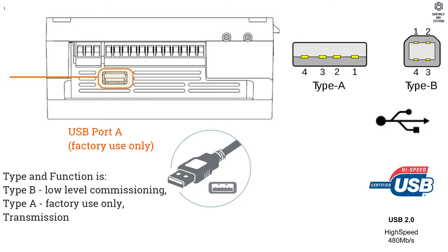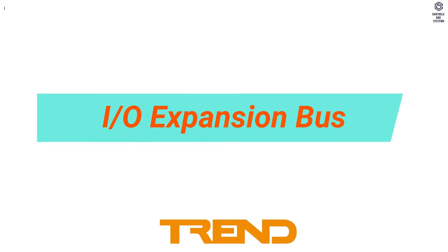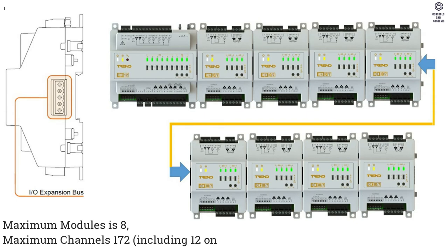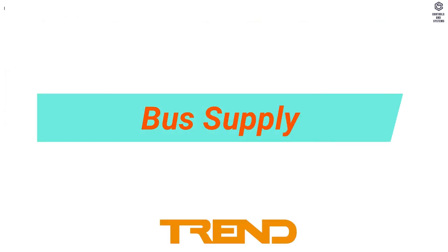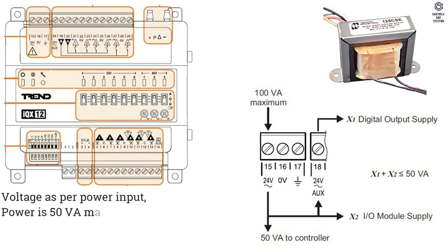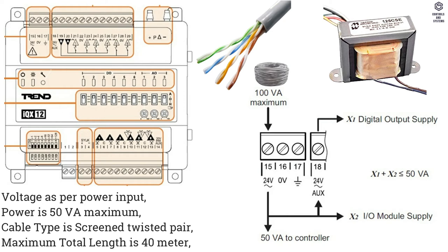USB transmission is USB 2.0, data rate is 480 Mbps (high speed), distance is 5 meters maximum. IO Expansion Bus: Maximum modules is 8, maximum channels is 172 including 12 on controller. Bus supply voltage is per power input, power is 50 VA maximum, cable type is screened twisted pair, maximum total length is 40 meters.